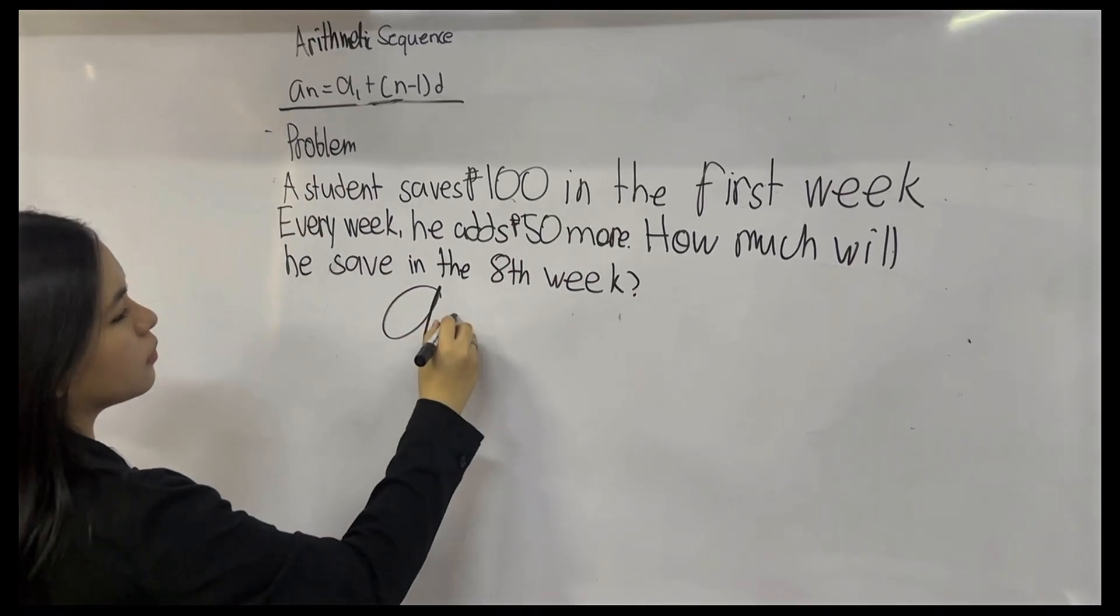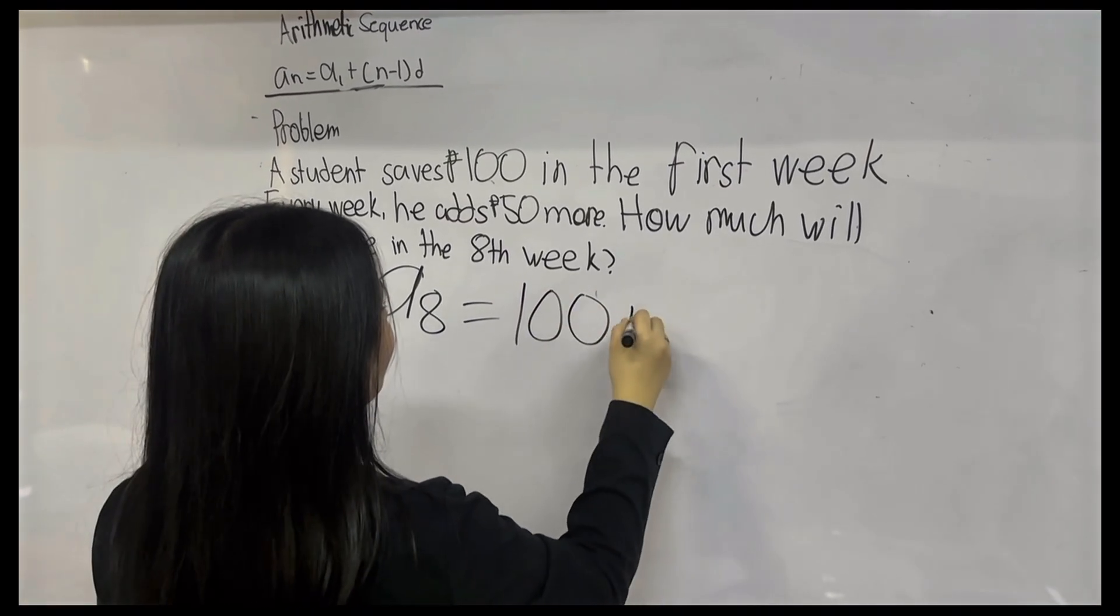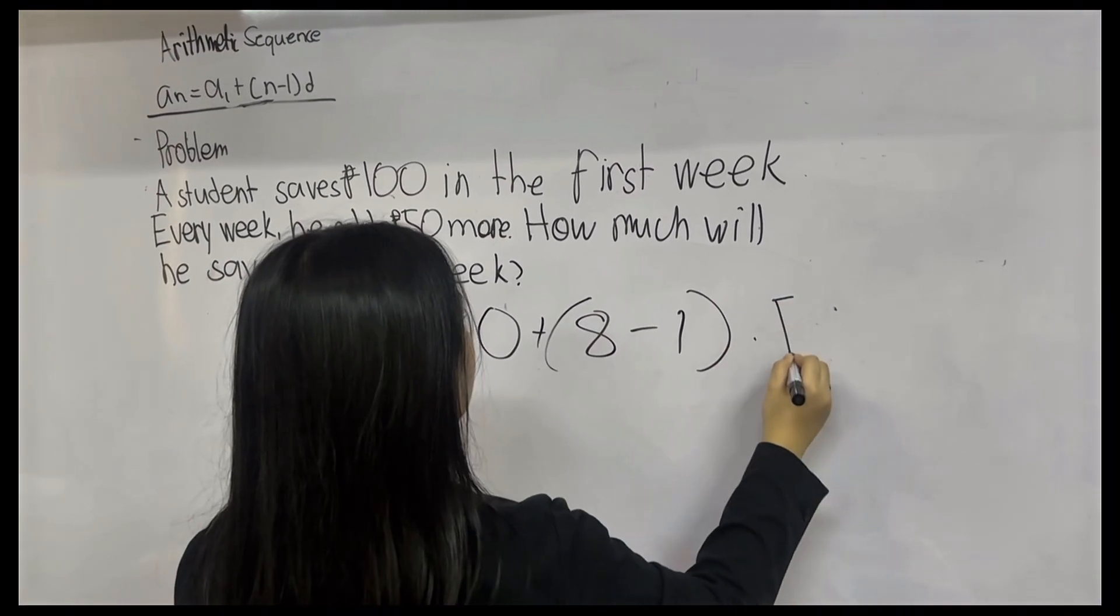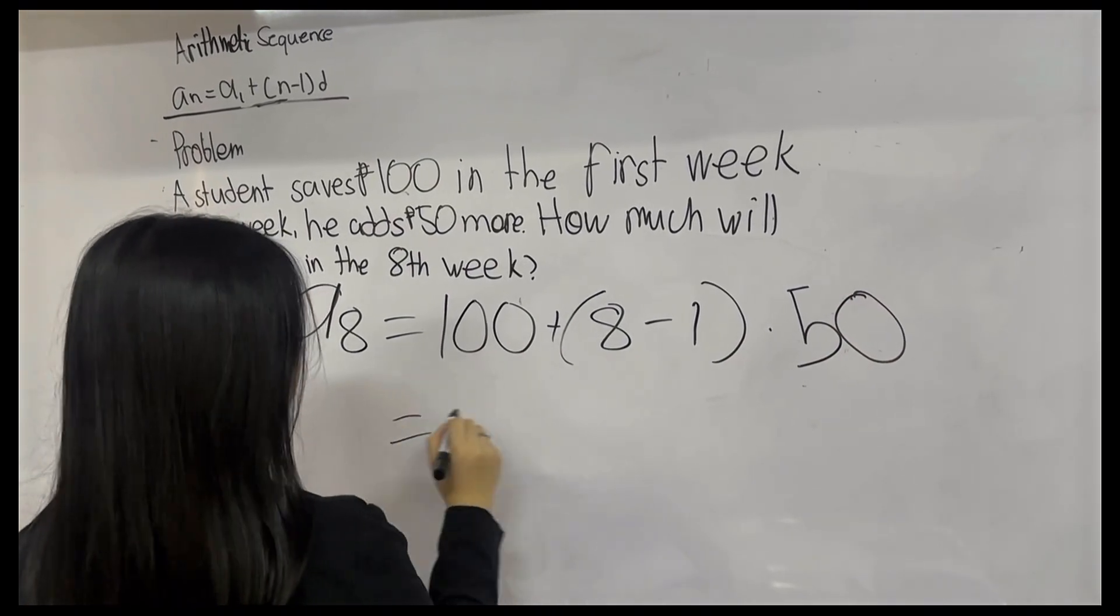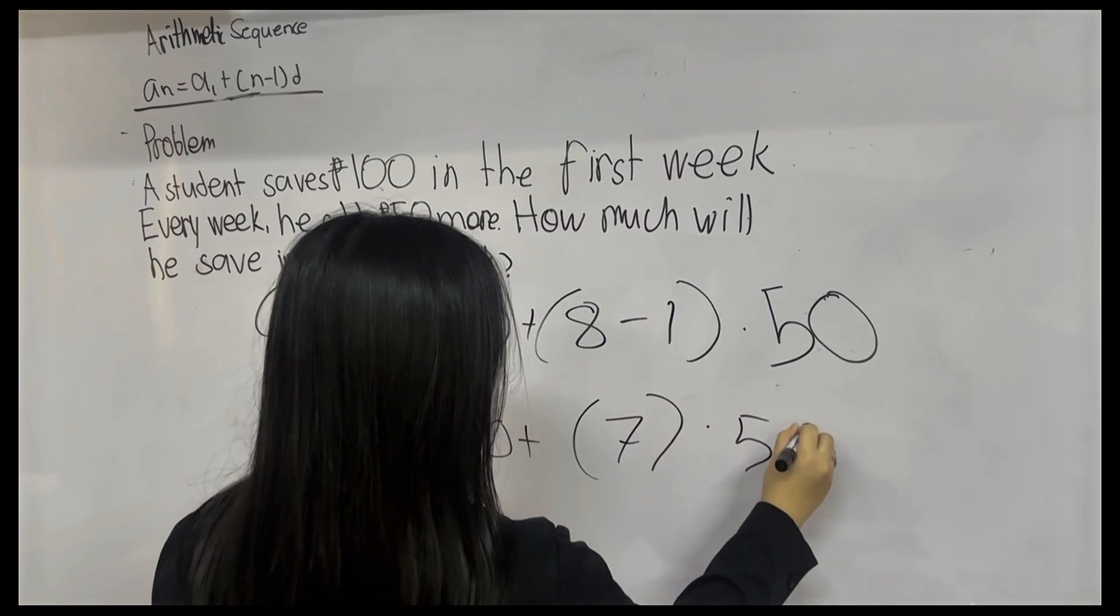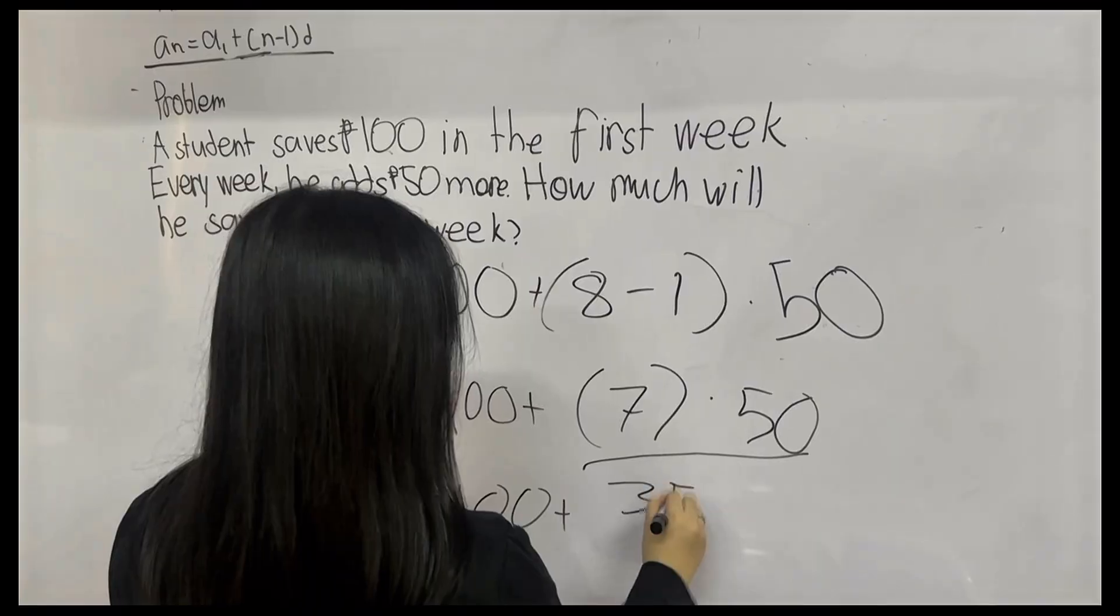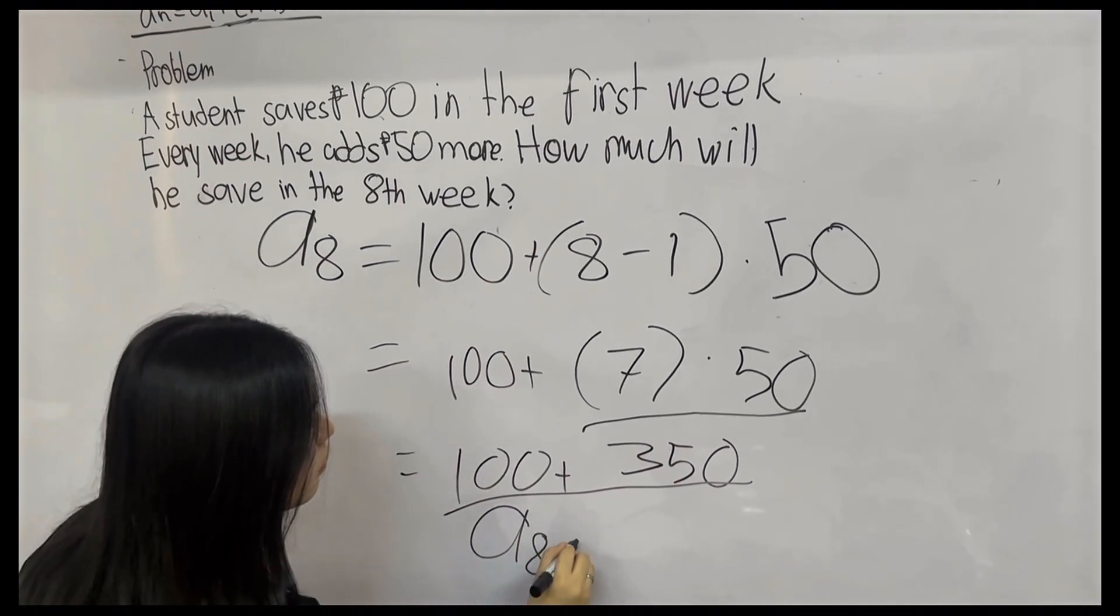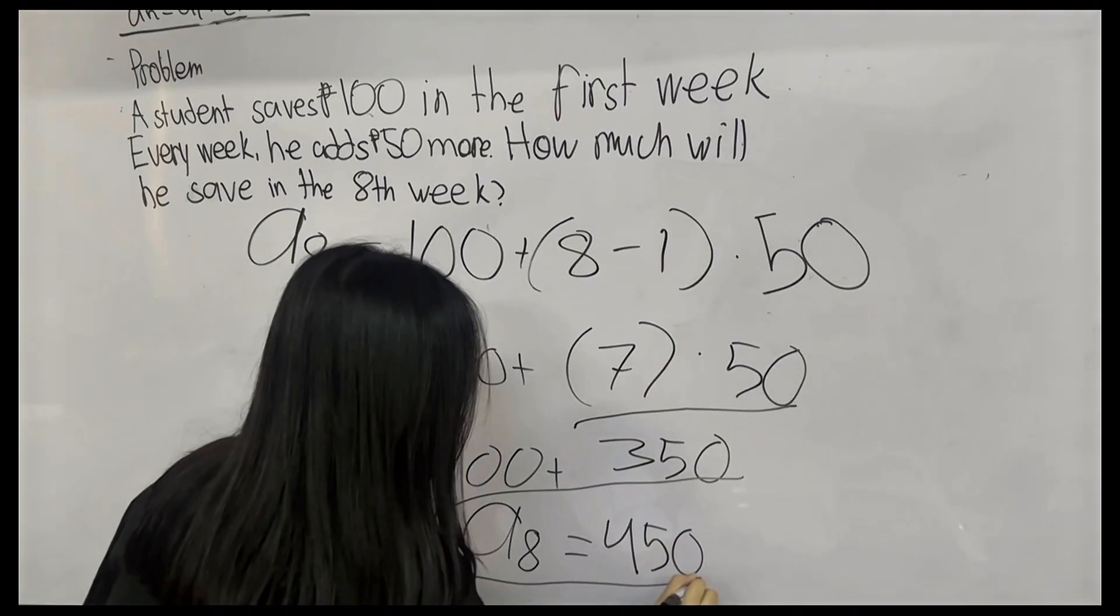First, let's write a sub n which is a sub 8. Then 100 as the a sub 1. After that, let's put the addition operation. Then open parenthesis and 8 as our n term subtracted by 1, and multiplied by 50 as our common difference. According to PEMDAS, we solve inside the parenthesis first. So, 8 minus 1 is equal to 7. Then we multiply 7 by 50 which is 350. Finally, we add 100 and 350 giving us 450. So for the eighth term, it equals 450 pesos.